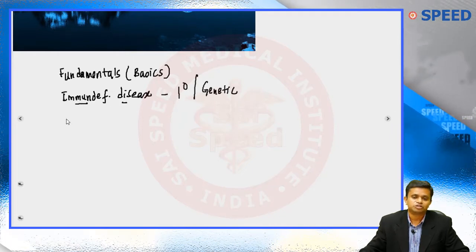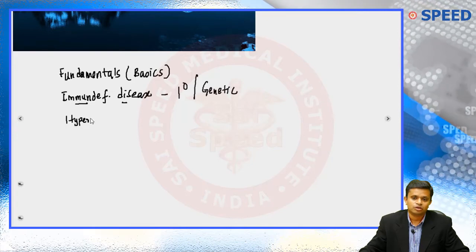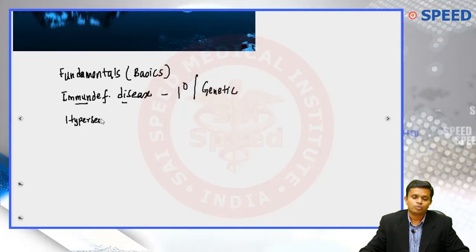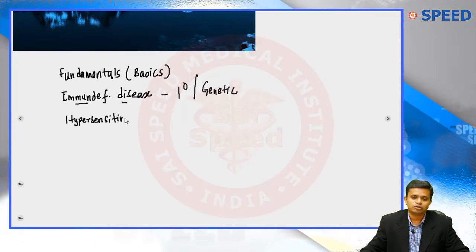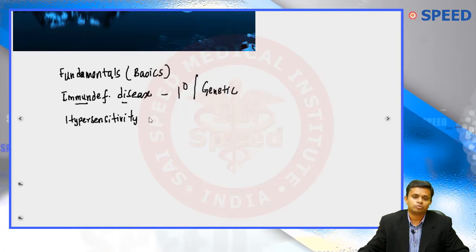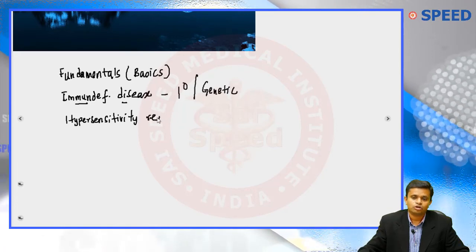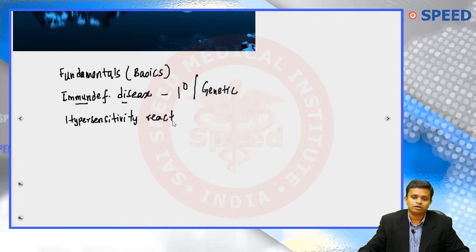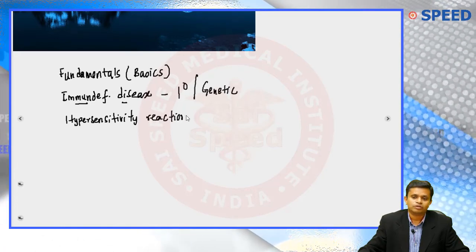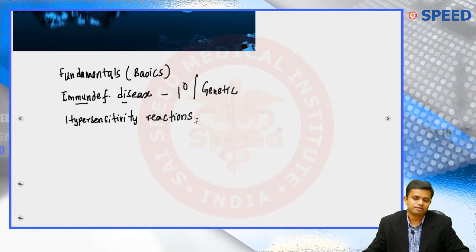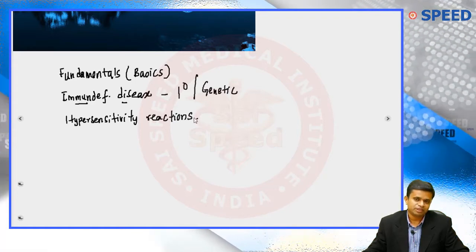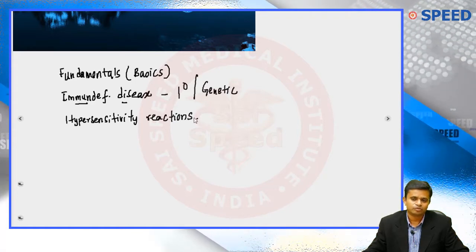The third section we need to focus on for exams is hypersensitive reactions. There are a lot of questions on hypersensitive reactions — type 1, type 2, type 3, and type 4. You have to know the underlying mechanisms involved in each type of hypersensitive reaction.